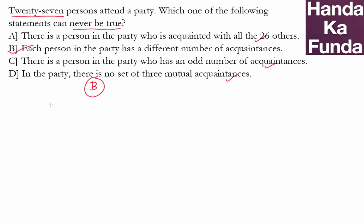You start with the lowest possibility. Let's say there is a person who knows nobody or zero acquaintances. Then one with one acquaintance, then two, then three, then four, till 26. So these are 27 separate possibilities.